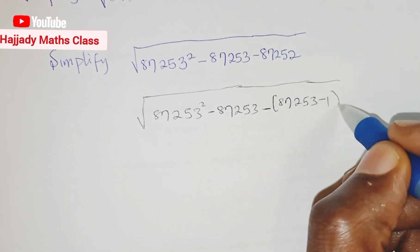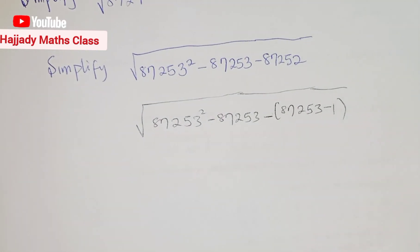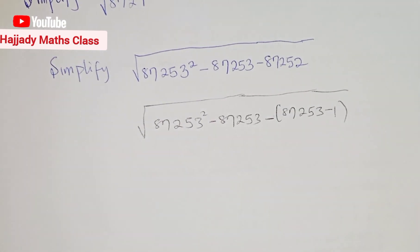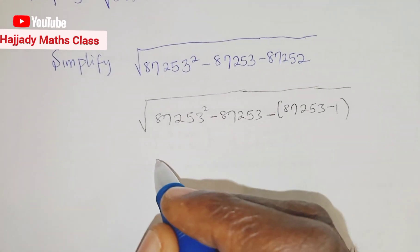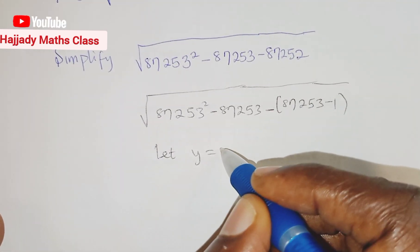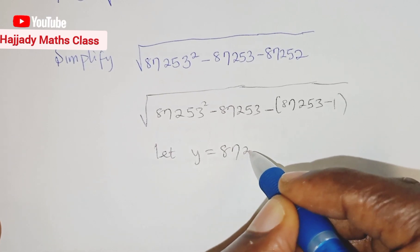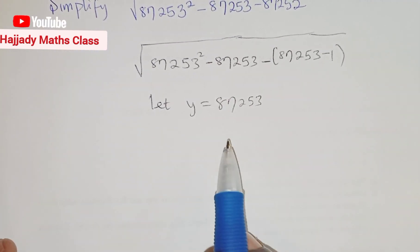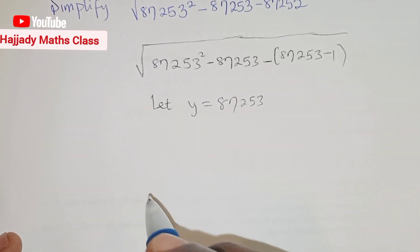So when you subtract negative 1 from this, we are going to have this. Now simplifying this further, we can say that let y be equal to 87253. So we are going to change the value, substitute the value of y with 87253.